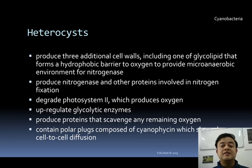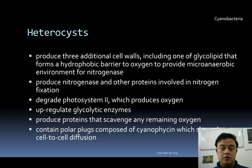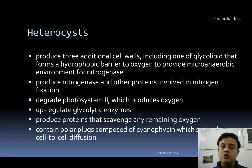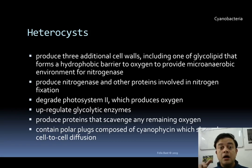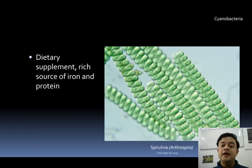Heterocysts also contain special plugs called polar plugs, composed of cyanophysin, which slow down cell-to-cell diffusion. The heterocyst is surrounded on both sides by aerobic cells, and if cell-to-cell diffusion occurred, oxygen could diffuse from neighboring cells into the heterocyst. The cyanophysin-containing polar plugs act as leak-proof plugs to prevent this oxygen entry.